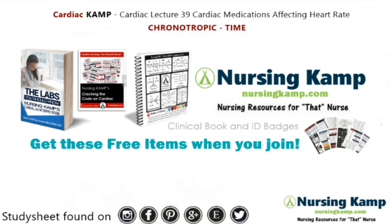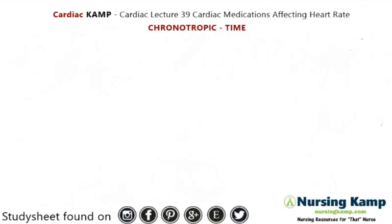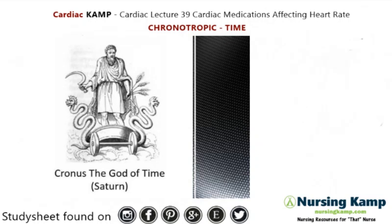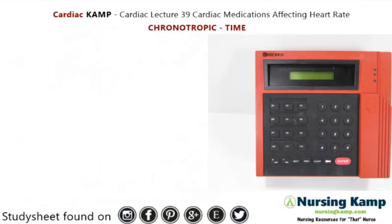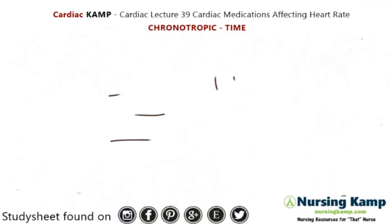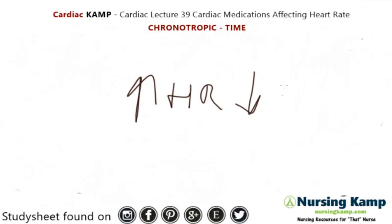In my previous lectures I've talked about cardiac medications individually, and in this lecture I'm going to talk a little bit more about a specific term called chronotropic. Chronotropic comes from the Greek word for time — chronos — and it refers to things that affect the timing of the heart, either speeding up or slowing down the heart rate.